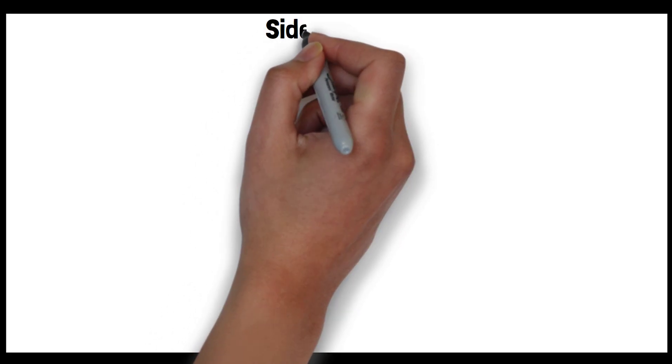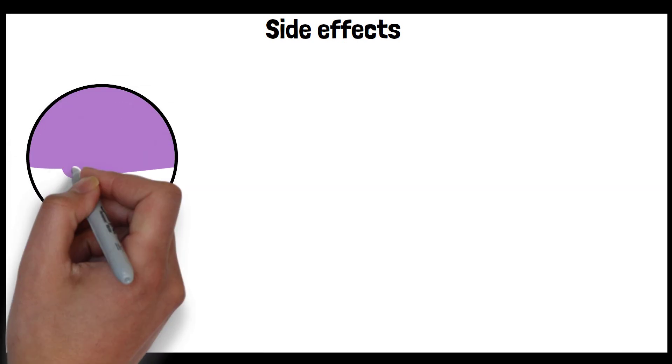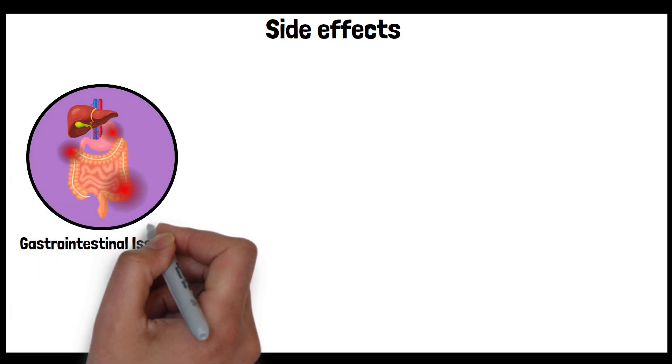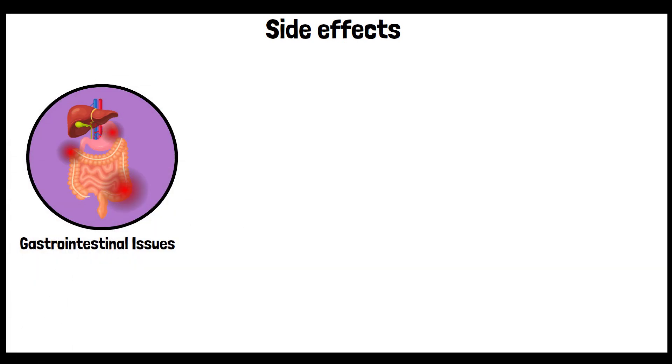When glutamine is taken in higher doses, it can come with some side effects such as gastrointestinal issues, like nausea, vomiting, abdominal pain, and constipation.